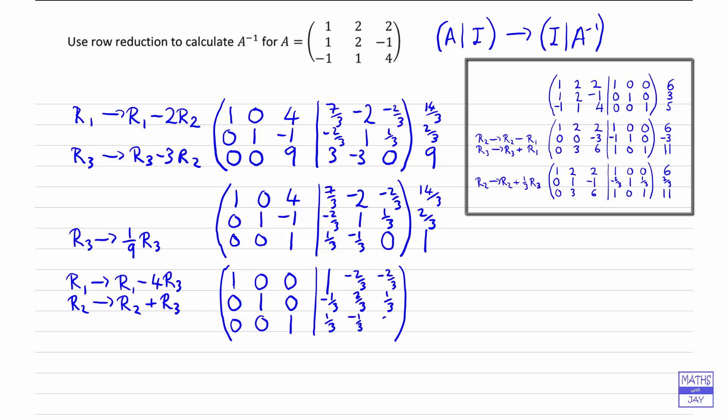And then on the right-hand side, let's just work out what our checks should be: row 1 minus 4 times row 3 is 14 thirds minus 4, so that's 14 minus 12 divided by 3, which is 2 thirds. And then 2 thirds plus 1, so that's going to be 5 thirds. And 1 just stays as it is. Checking when we add across: the top row gives 1 plus 1 minus 2, that's 2 thirds — checking. In the second row, the thirds cancel each other out, we're left with 1 plus 2 thirds, which is 5 thirds. The last row, the third and the minus third cancel each other out, and we're then left with 1. Excellent.